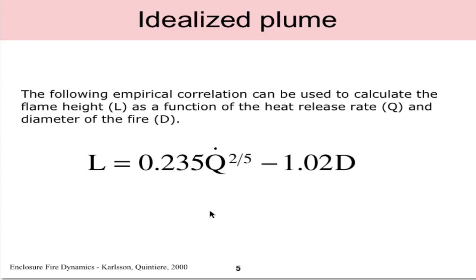In fact this equation from the textbook shows just that. It shows the L, the physical flame height, as a function of Q, the total heat release rate, and D, the diameter of the fire. Notice the units on this Q is in kilowatts and D is the diameter of the fire in meters or the equivalent diameter in meters.